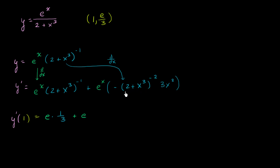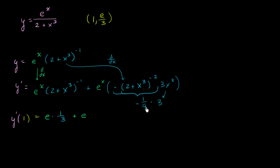Now for the second part: 2 plus 1 to the negative 2 power is 3 to the negative 2, which is 1 ninth. With the negative sign, that's negative 1 ninth. Then we multiply by 3 times 1, which is 3. So it's negative 1 ninth times 3, which is negative 3 ninths, or negative 1 third. So the second term is e times negative 1 third. I substituted 1 for x and evaluated it.